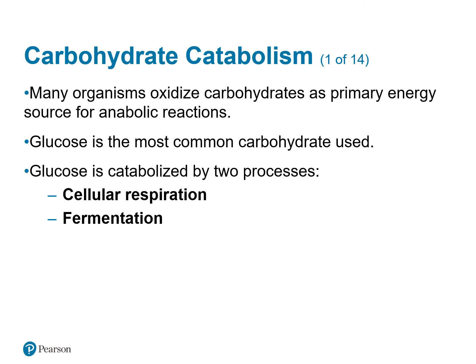Many organisms oxidize carbohydrates as their primary energy source for anabolic reactions. Glucose is the most common carbohydrate used. Glucose is broken down or catabolized by two processes. The first one we'll discuss is cellular respiration, then fermentation. We're going to talk about catabolism and anabolism of other biological molecules: carbohydrates, lipids, proteins, and briefly nucleic acids. But the first one we'll look at is carbohydrates.